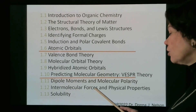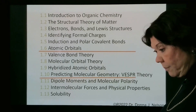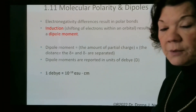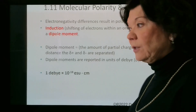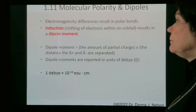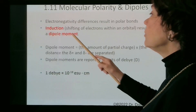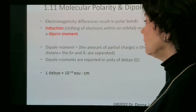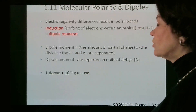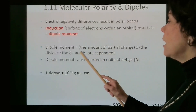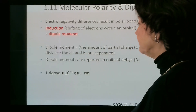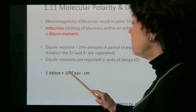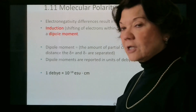Electronegativity differences result in polar bonds, and polar bonds can greatly influence how reactions take place. Electronegativity differences cause induction — the shifting of electrons within an orbital — and that results in a dipole moment in the molecule. The dipole moment is calculated by the amount of partial charge times the distance between the two charges. Dipole moments are reported in units of debyes; a debye equals 10 to the minus 18 electrostatic units times centimeters.